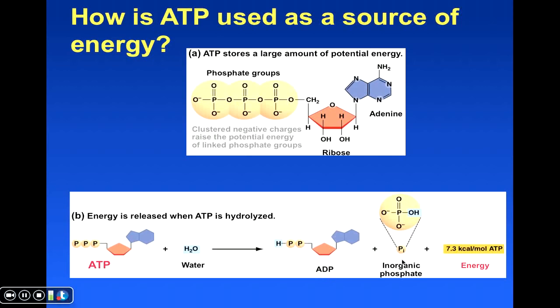So when that takes place, that releases energy, right? About 7.3 kilocalories per mole of ATP. So that's an exergonic reaction.